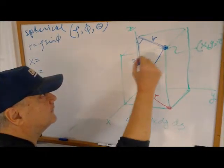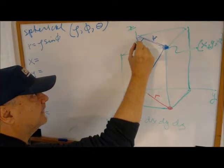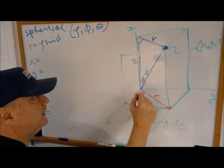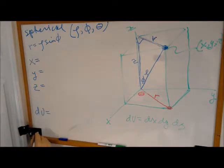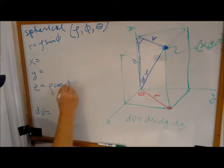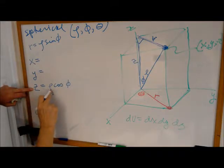That's r. So what's z? Well, same right triangle. 90 degrees. The hypotenuse is rho. So z is rho cosine phi. That takes care of z, rho and phi.